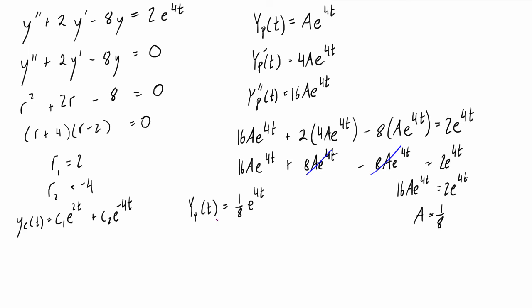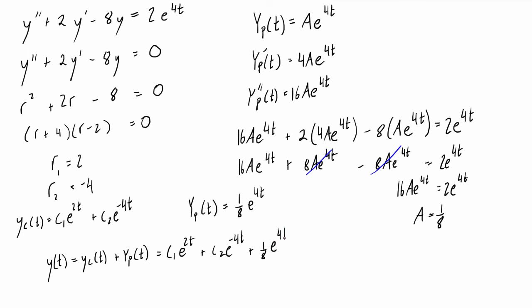If your professor was asking just for a particular solution, you have your answer. But if they asked for the general solution, it's simply y_c(t) + y_p(t). Combining both, the general solution is: c₁e^(2t) + c₂e^(−4t) + (1/8)e^(4t).